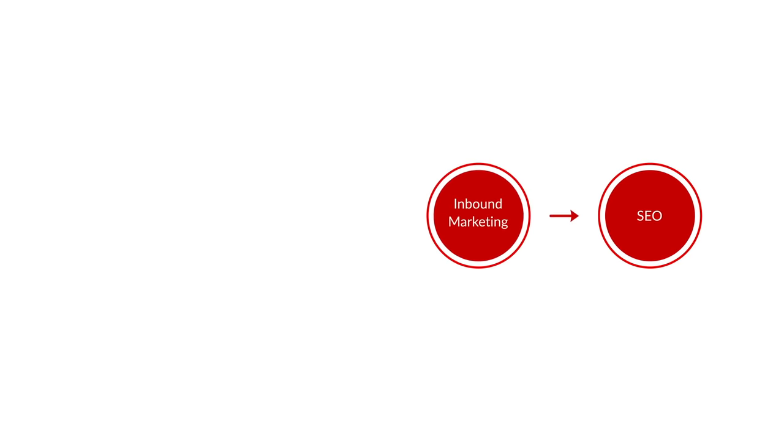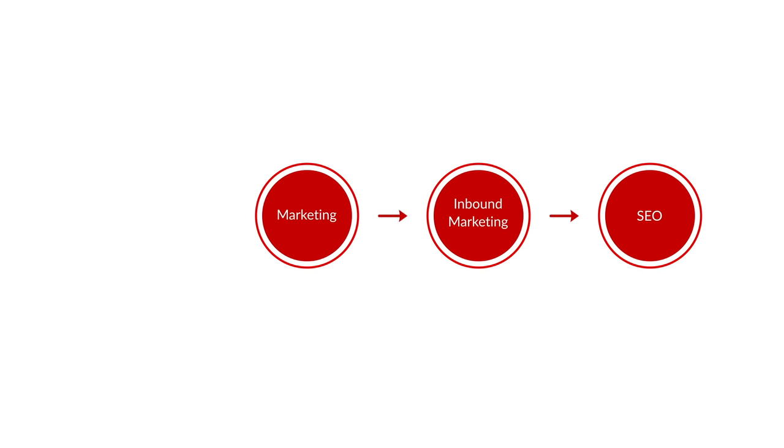Let's take Gottsch SEO for example. Gottsch SEO is an authority website in the SEO industry, but when you take a step back, my website is actually a micro niche of inbound marketing. Inbound marketing is a micro niche of marketing, and marketing is a micro niche of business. So technically, SEO as a topic is a micro, micro, micro niche of business.